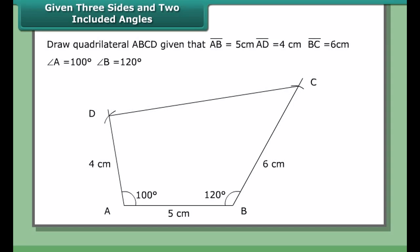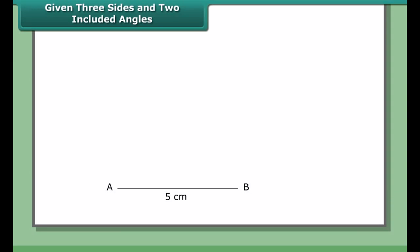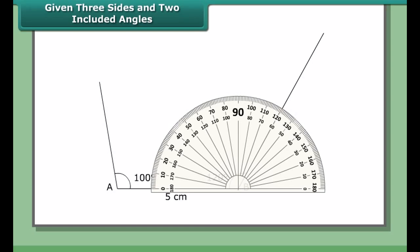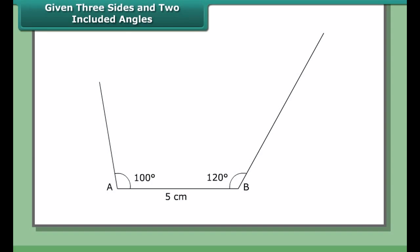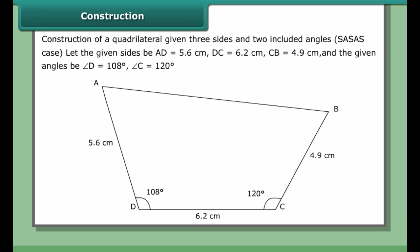Given three sides and two included angles, draw quadrilateral ABCD given that AB = 5 cm, AD = 4 cm, BC = 6 cm, angle A = 100°, and angle B = 120°. Steps: 1. Draw AB as 5 cm. 2. At A, draw an angle of 100°, and at B, draw an angle of 120°. 3. Mark off distance AD as 4 cm and BC as 6 cm. 4. Join CD. ABCD is the required quadrilateral.